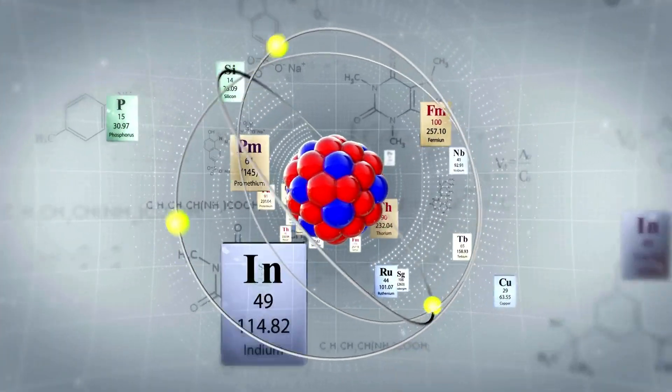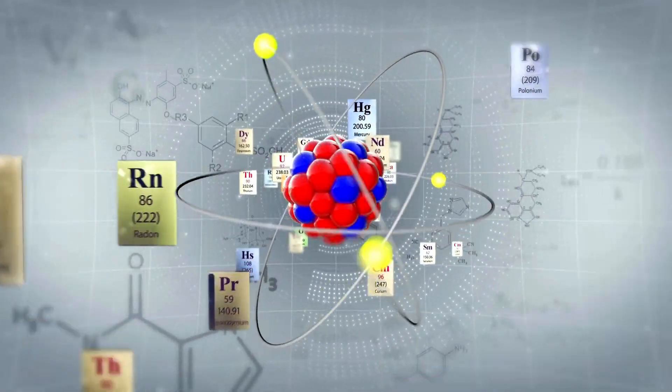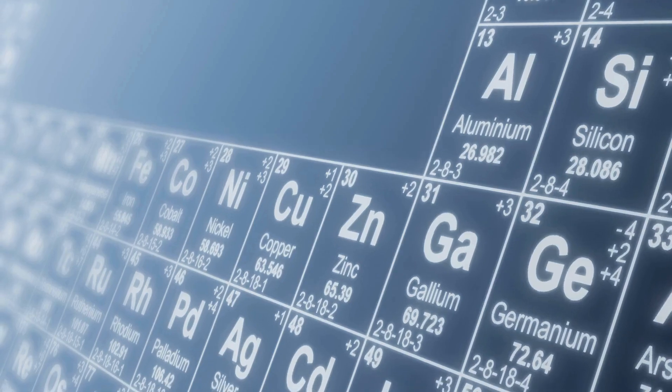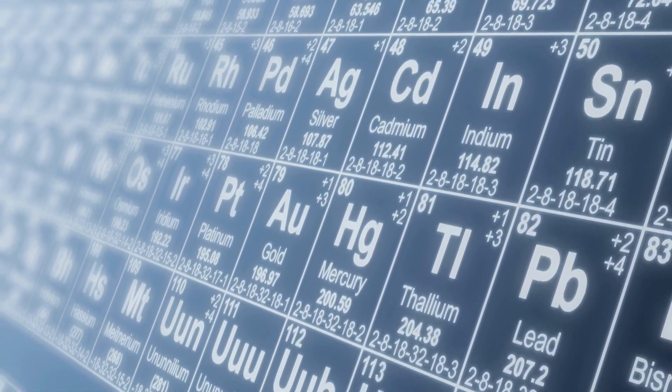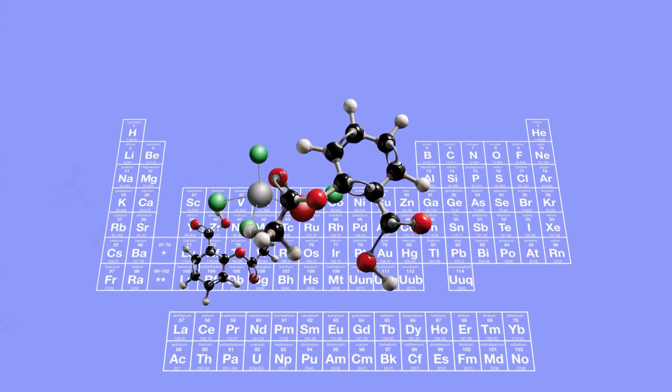This brings us to an important point about the periodic table. It's generally true that elements at the beginning of the periodic table like hydrogen, helium, and carbon are more abundant than the heavier elements that follow.